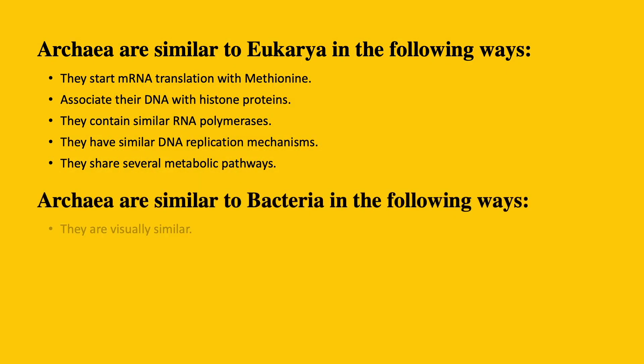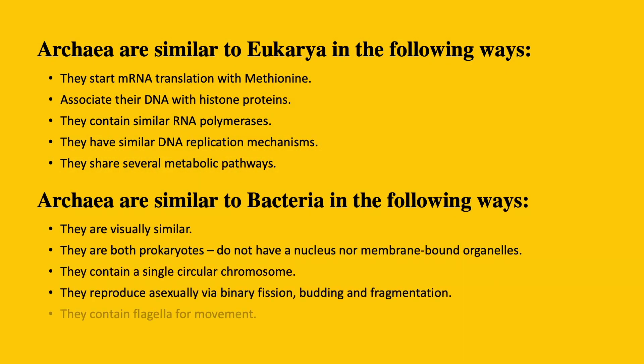Archaea are similar to bacteria in the following ways: they are visually similar, they are both prokaryotes — that is, they do not contain a membrane-bound nucleus or other membrane-bound organelles. They contain a single circular chromosome, they reproduce via binary fission, budding, and fragmentation, and they contain flagella for movement.